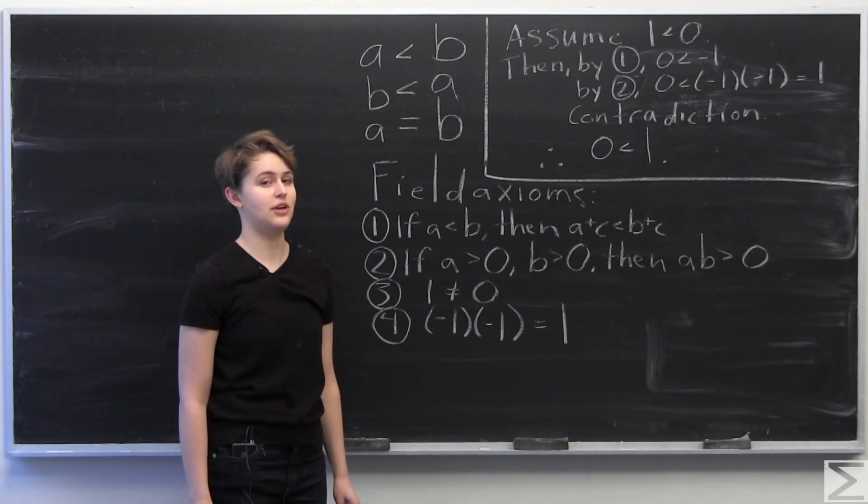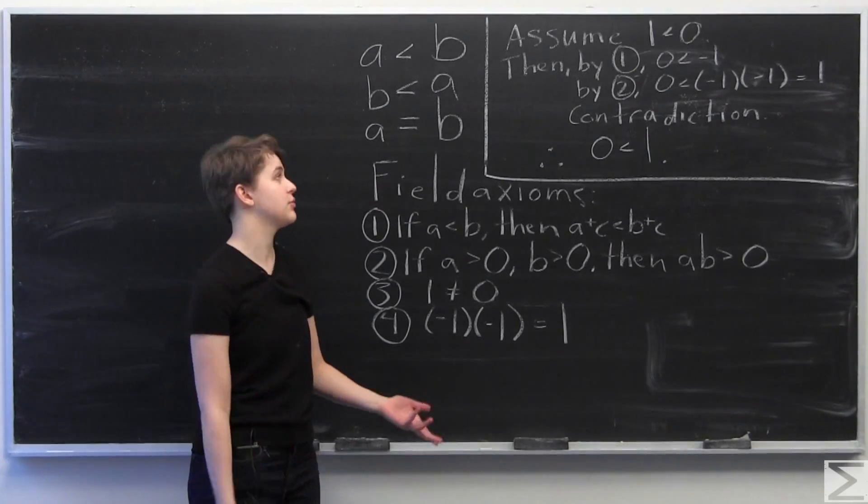OK, so I'm going to prove that 0 is less than 1 in an ordered field. For example, the real numbers, which are an ordered field.